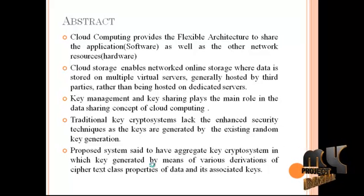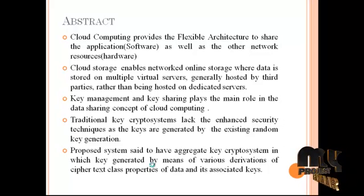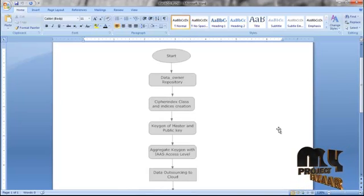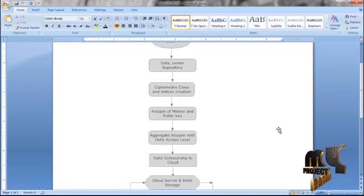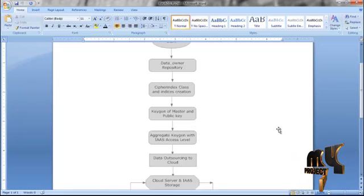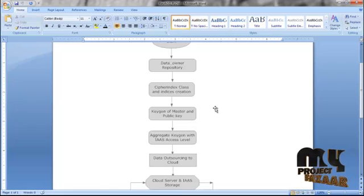Keys are created in a complex manner so no one can easily obtain the key, and data can be shared securely. Looking at the process flow: the data owner plays a main role — he will first classify instances by which cipher indexes and respective classes are created.